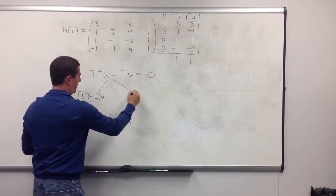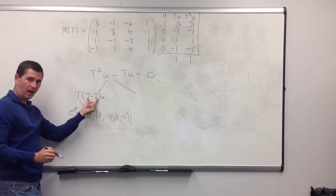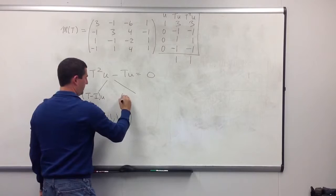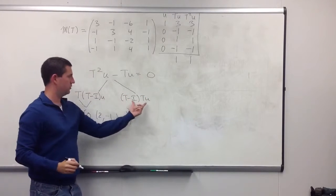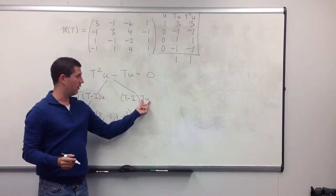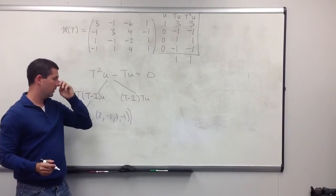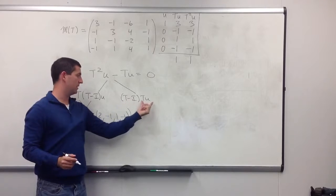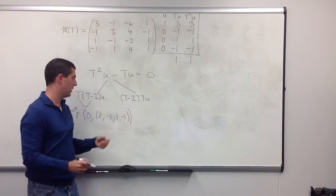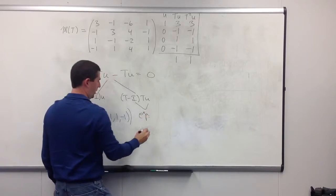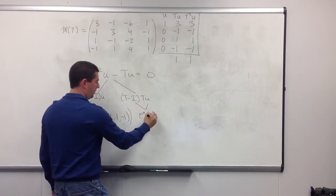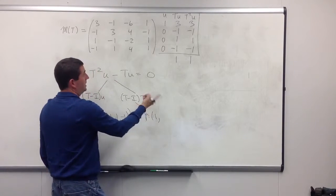But another way we could have written this was to put the T minus I first. So, we could have (T minus I) applied to Tu. And this shows you that, well, now Tu is not 0. That Tu is going to be an eigenvector for the eigenvalue 1 because Tu is in the null space of T minus I. So, we get another eigenpair.